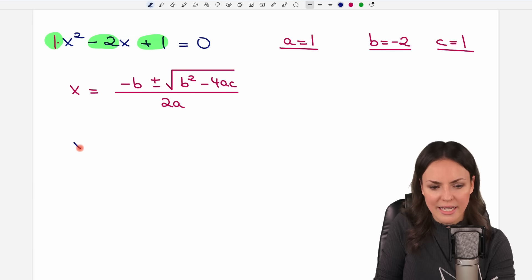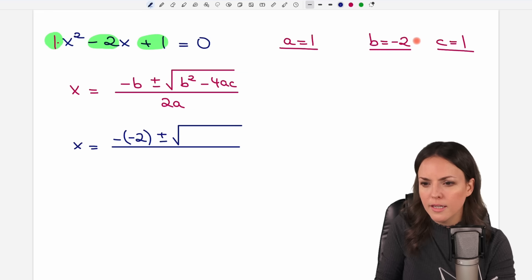Let's put everything into the formula. Minus b equals negative 2. So we put parentheses around here. Then plus minus the square root of b squared. b was negative 2 and we square it and we subtract 4 times a equals 1.